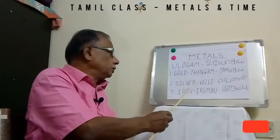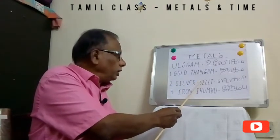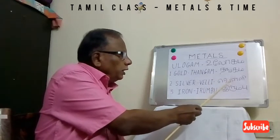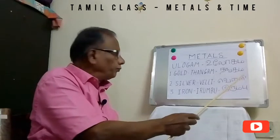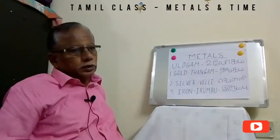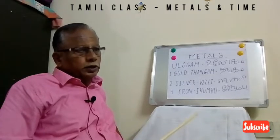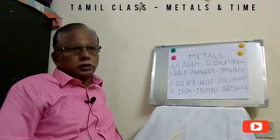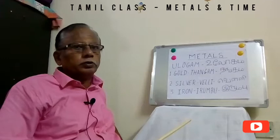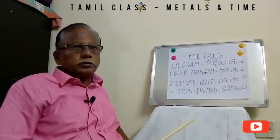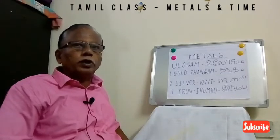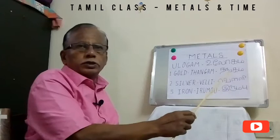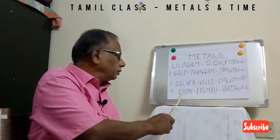Second is Silver. For silver, it is called Velli — V-E-L-L-I. Normally for any ornaments, if they want to make them they choose Friday. Silver is meant for Friday. So the same word Velli — Velli means silver.